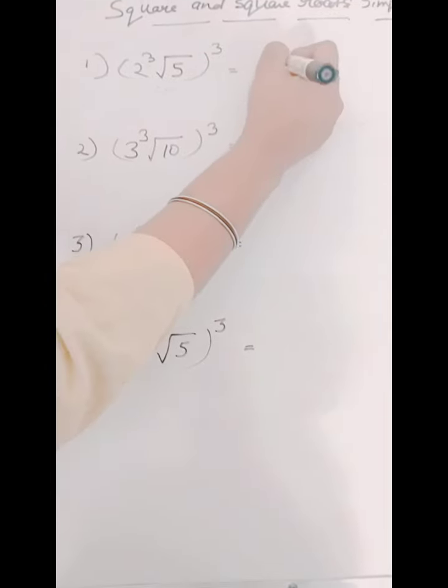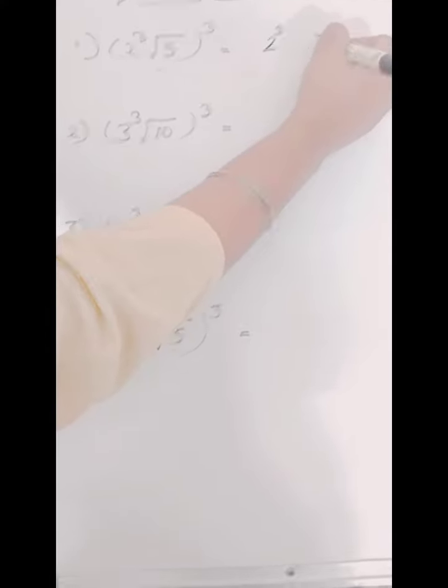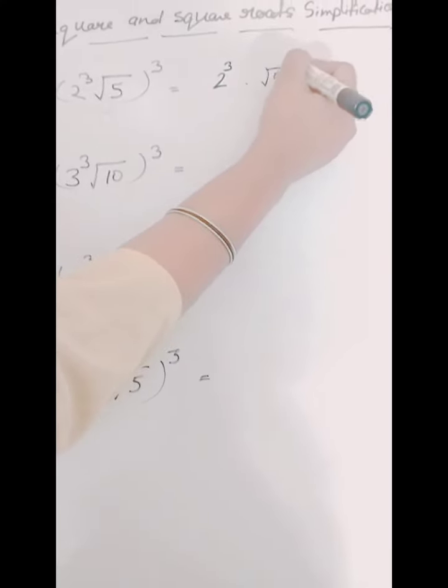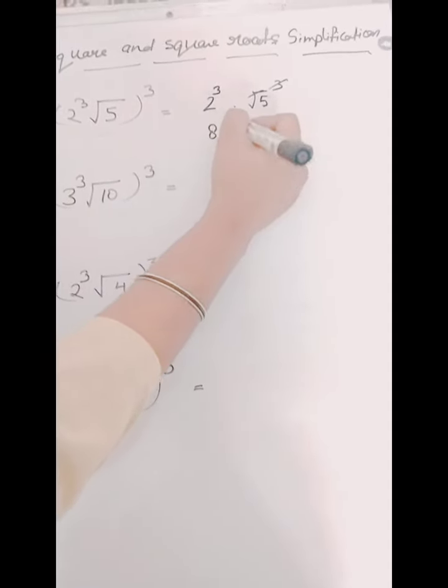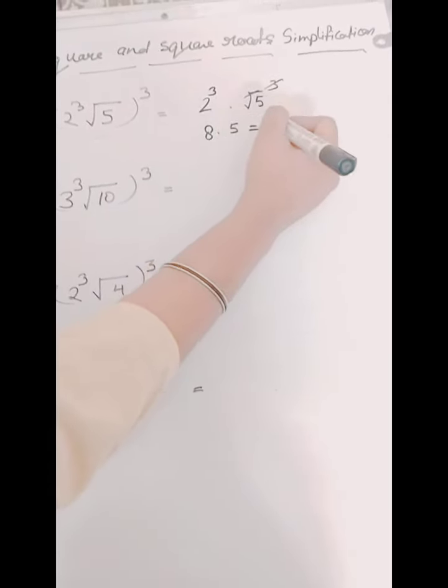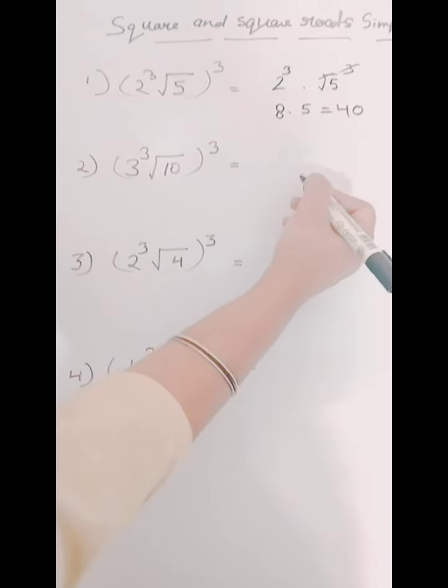So firstly we will cut the brackets here 3 and 2. Now we will find the cube of 2 which is 8 multiplied by 5 which is equal to 40. So the answer is 40.